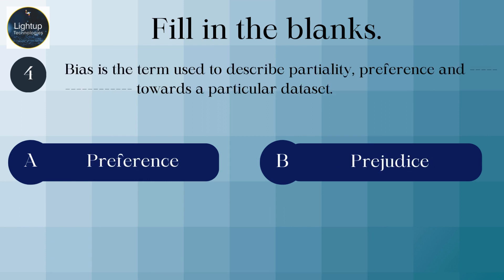Bias is the term used to describe partiality, preference, and dash towards a particular dataset.